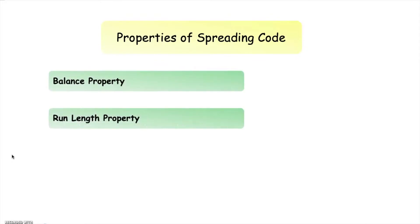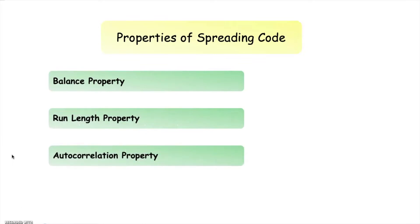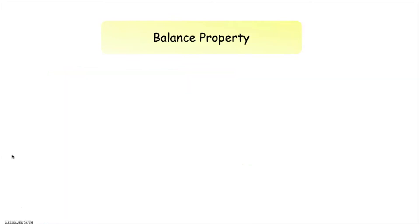The various properties of spreading codes are: balance property, run length property, and autocorrelation property. Let us discuss these properties in detail.